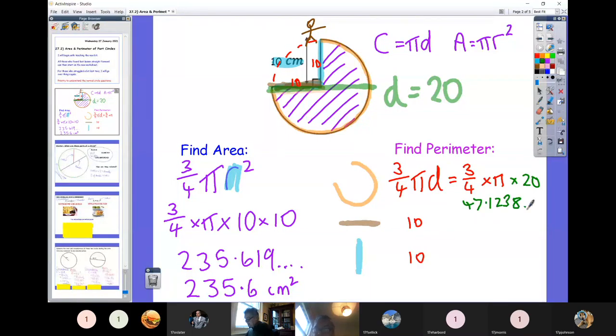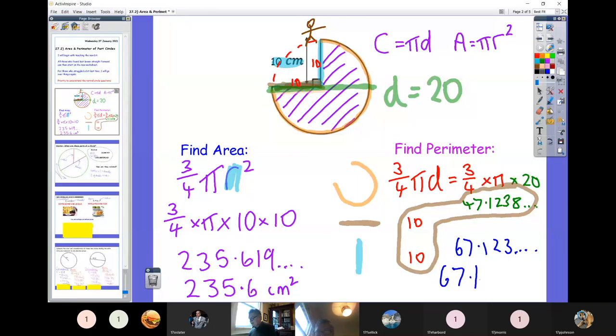I would then go and add up those three numbers, add up those three numbers there to get the total journey all the way around, and that's going to give me 67.123 dot dot dot. So to one decimal place, 67.1. And that's a length, that is the circumference, so that would be a final answer of 67.1 centimeters.